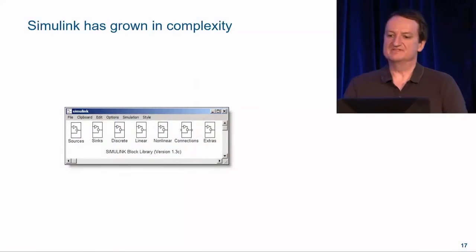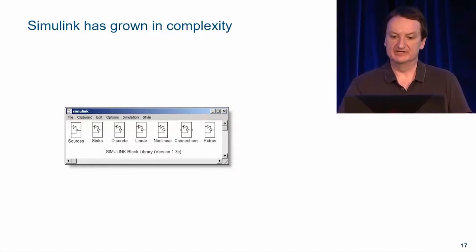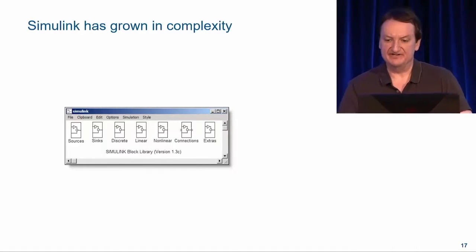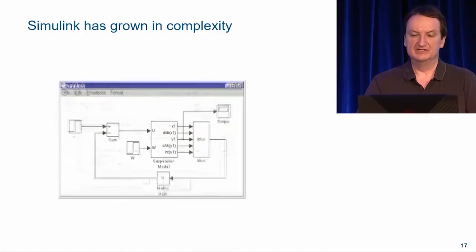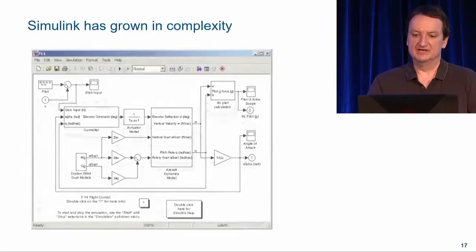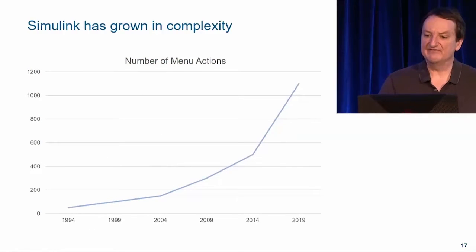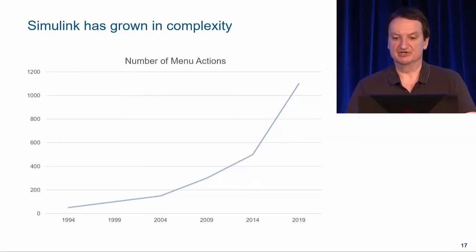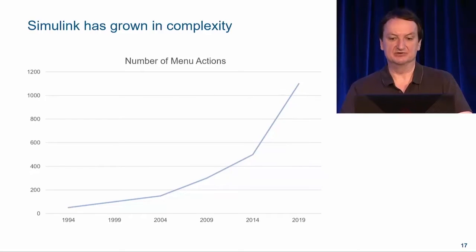In the beginning, Simulink was just a simple tool for modeling and simulating dynamic systems. Its actions were quite limited. But over time, as we added features, the number of actions available in the menus grew and grew and grew. In 19A, we have over 1,100 actions available from the Simulink menus, and the number is growing every year. We had to come up with a new paradigm to organize and present all of this functionality to you.